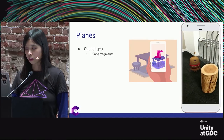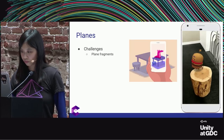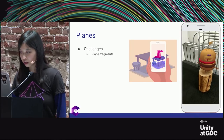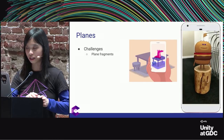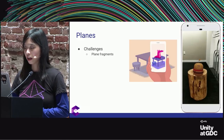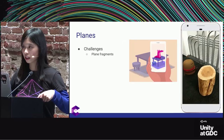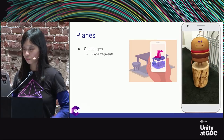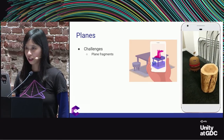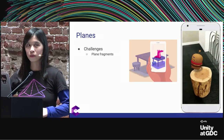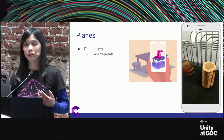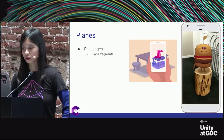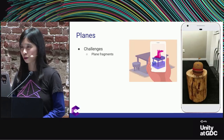We found three key things to check for valid planes: 'subsumed by' is null (meaning it's never been taken over by another plane), its boundary vertex count is not zero, and its x and z extents are not zero. We learned the hard way that if you are visualizing planes, you might be visualizing invalid ones. This can result in things like a plane floating in mid-air. You can't just take all the planes ARCore gives you and use them blindly.